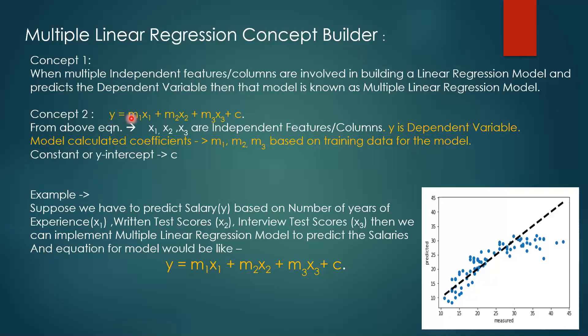M1, M2, and M3 are the slopes or coefficients, and they will be calculated by the model based on the training data. These coefficients do not have a fixed range — they can take any integer or float value, including negative values. C is the intercept, also called the Y-intercept or constant. It is the value of Y where X is equal to zero — the height at which the line cuts the Y axis.